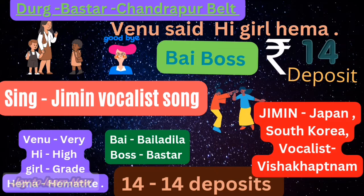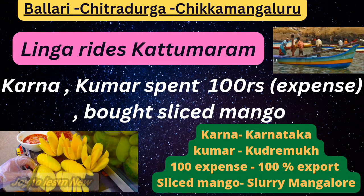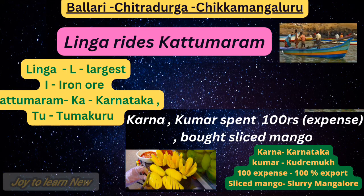The third belt is the Bellary-Chitradurga-Chikmagalur belt. The shortcut is 'Linga rights Kattumaram.' Kattumaram is a boat made with wood. In the explanation: L stands for large, I stands for iron ore, K stands for Karnataka, Tu stands for Tumakuru — so Tumakuru belt in Karnataka has large reserves of iron ore.